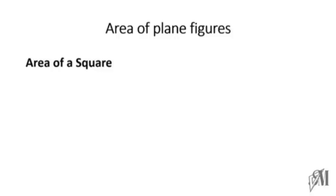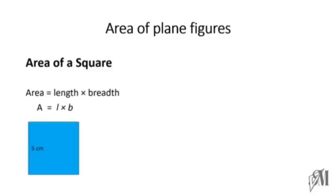The first is area of a square. It is equal to the product of its length and breadth. When it comes to a square, you know the length and breadth will be the same. If you take this square whose length is 5 centimeters, its area will be 5 centimeters into 5 centimeters, that is 25 centimeters squared.